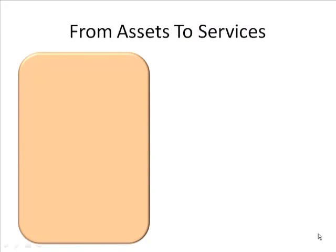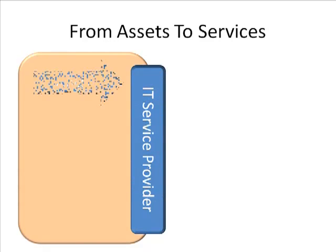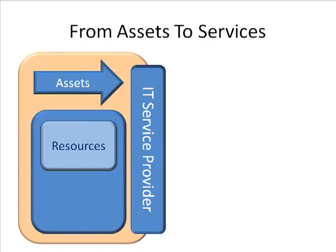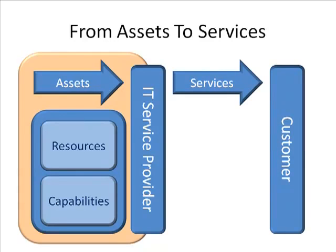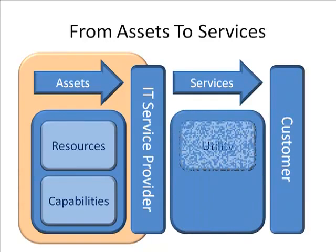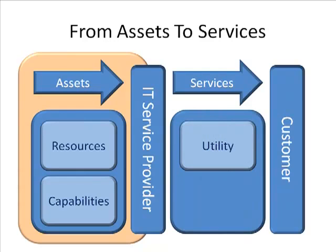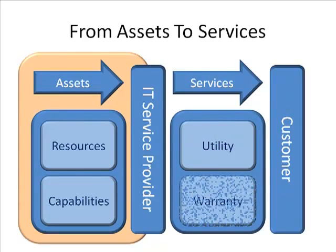Let's walk through our assets-to-services model again. As an IT service provider, we need assets — resources as stuff we own, and capabilities as stuff we can do — because in the end we want to deliver services to our customers. As part of services, we need to look at utility: are the services fit for purpose? And we need to look at warranty: are the services fit for use?